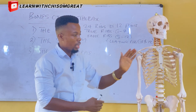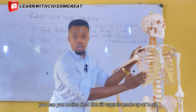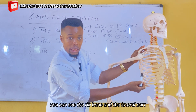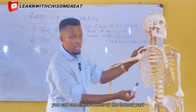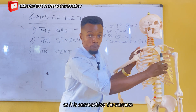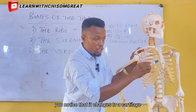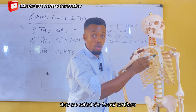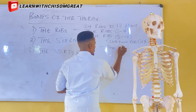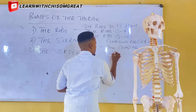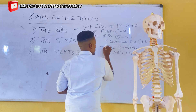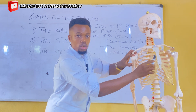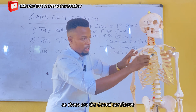You can notice that the rib cage is made up of both the rib bone and the cartilage. You can see the rib bone at the lateral part, but when you come to the medial part as it approaches the sternum, you notice that it changes to a cartilage. These cartilages are called the costal cartilage.